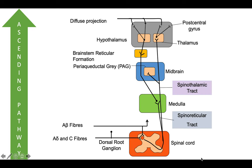The other pathway is through the spinothalamic tract, which sends a collateral to the periaqueductal gray (PAG) — a very important part in pain management — then to the thalamus and postcentral gyrus. That is the ascending pathway of pain. Looking at the descending pathway, it is tonically active all the time. Fibers from the cortex, thalamus, and hypothalamus pass through the midbrain, where the periaqueductal gray matter is present, and this is where opiates act.